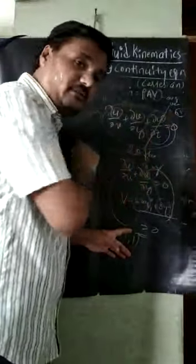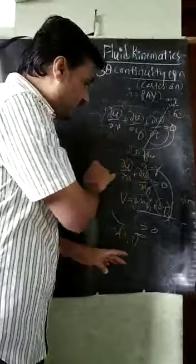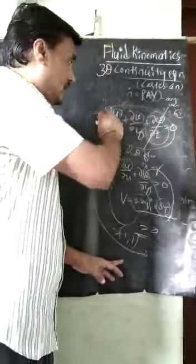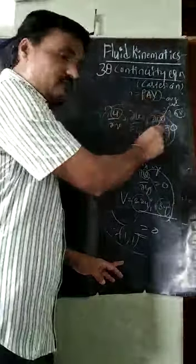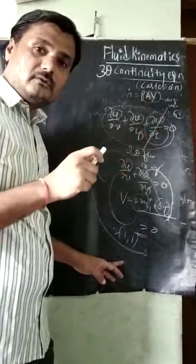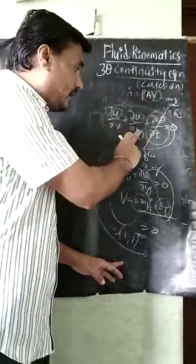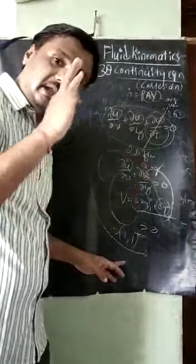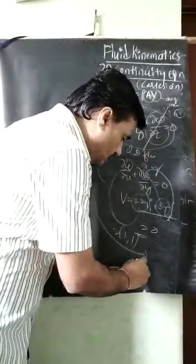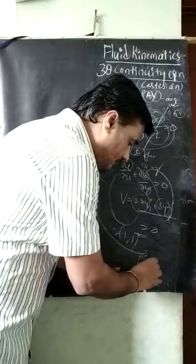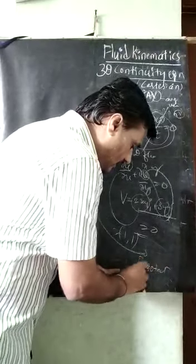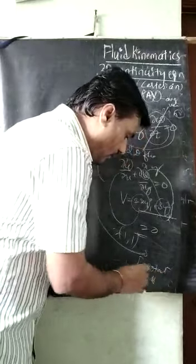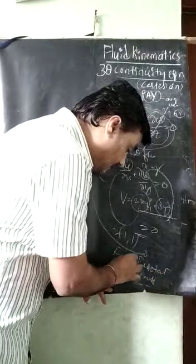This is the physical significance of the continuity equation. After differentiating the velocities with respect to the space coordinates, if the result is 0, it indicates that the fluid is irrotational, in steady flow, and in incompressible flow — and that the fluid flow is existing.